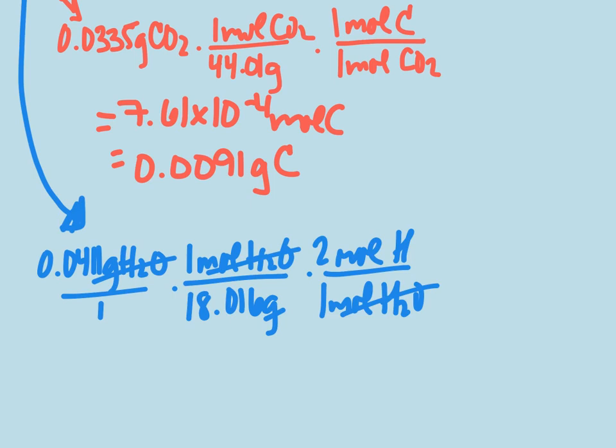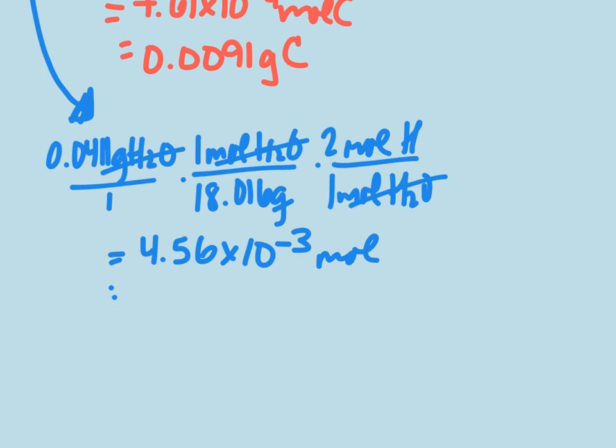And we end up with 4.56 times 10 to the negative 3rd moles, which when we multiply that by the molar mass, which is 1.008, we get 0.0046 grams of hydrogen.